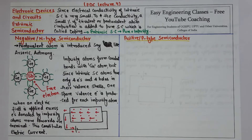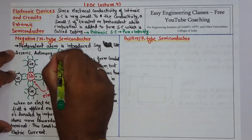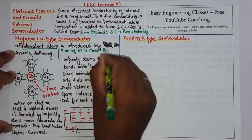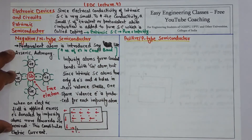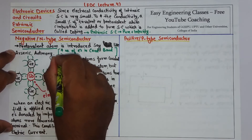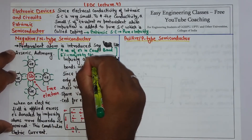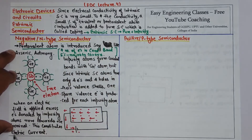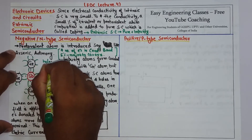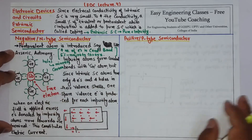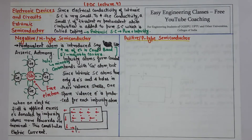There are two important points about n-type semiconductors. First, it increases the number of electrons in the conduction band, which automatically increases the electric current. Second, electrons are the majority carriers in an n-type semiconductor. This was the n-type semiconductor, where pentavalent impurity is added and for every impurity atom you get one free electron.